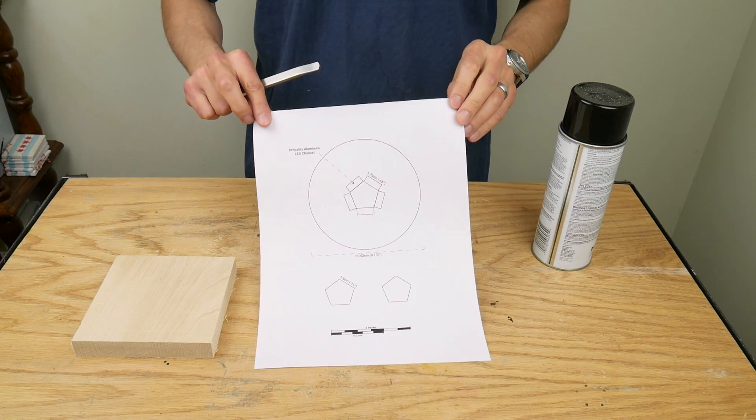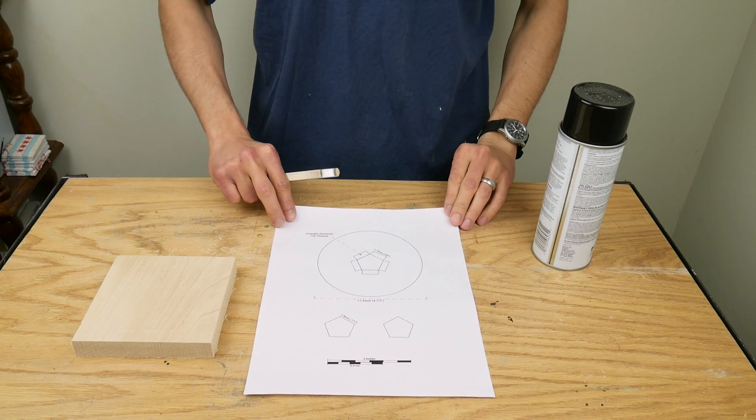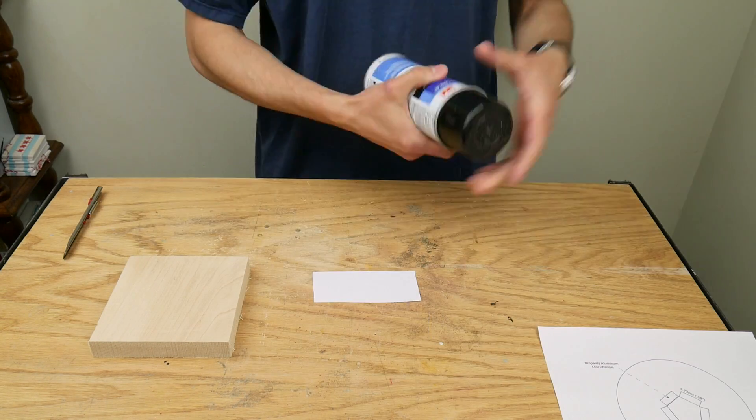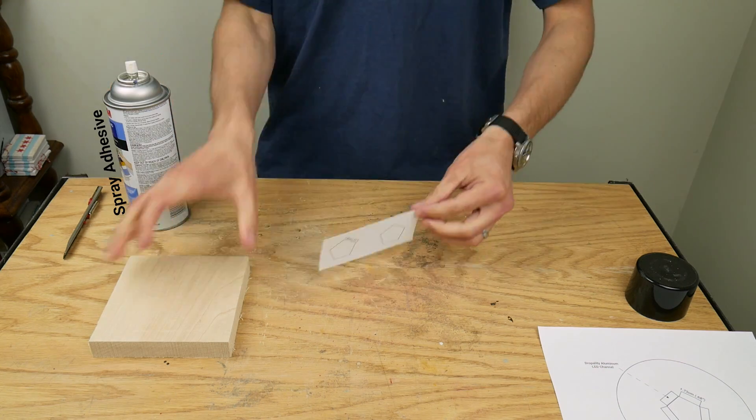I printed out a template of two pentagons, each with one point eight millimeter sides. This template is part of the plans you can download. I used spray adhesive to attach the template to an extra piece of one inch thick maple.